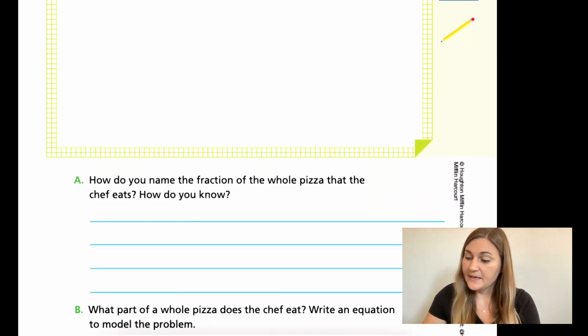So I want you to practice drawing that and trying to get one half of one third of a whole. Then in A, it says, how do you name the fraction of the whole pizza that the chef eats? And how do you know? So just saying, how did you come up with the fraction name based on what you did? And then B says, what part of a whole pizza does the chef eat? Write an equation to model the problem. So I want you to go ahead and just try these few problems. And then I will go ahead and go over it when you're done.